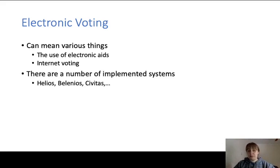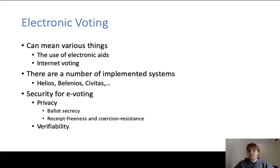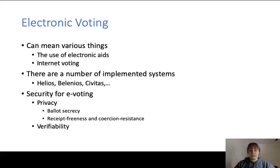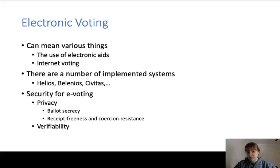There are a number of different implemented systems — for example, Helios, Belenios, and Civitas — and e-voting has been used in real elections. As with any cryptographic protocol, e-voting schemes should satisfy some notion of security. Usually the main properties required are privacy and verifiability. Privacy ensures that voters can cast their vote in secret, and at its most basic level it is defined as ballot secrecy, the subject of this talk. Stronger notions include receipt freeness and coercion resistance. Verifiability allows any interested party to check that the election result is computed correctly, though for this talk we restrict discussion to ballot secrecy.